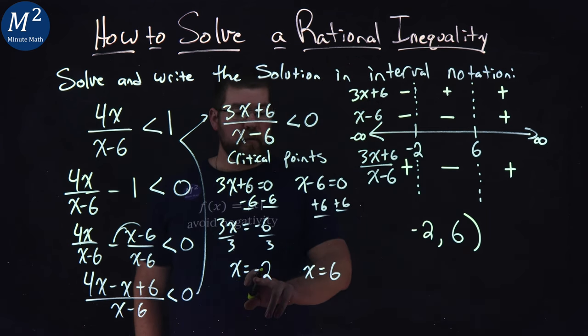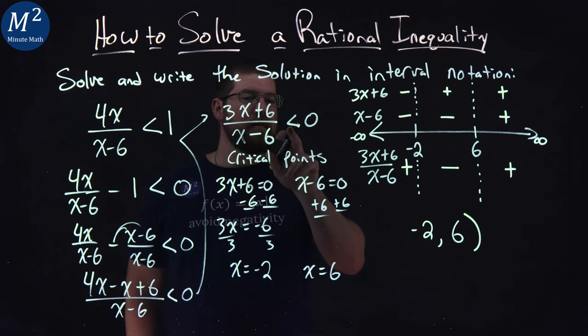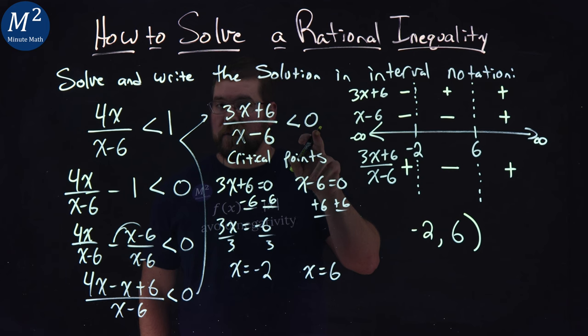What about negative 2? Well, negative 2 when plugged in causes the numerator to be 0. But 0 is not less than 0, it's equal to 0.